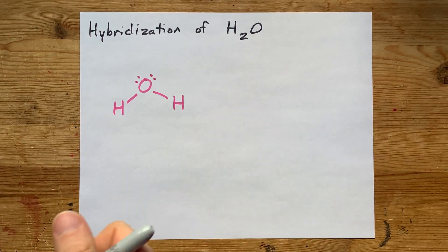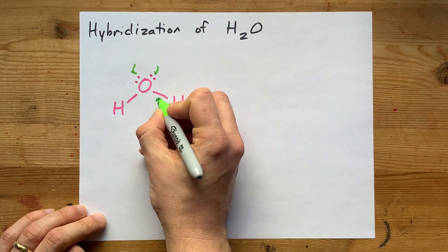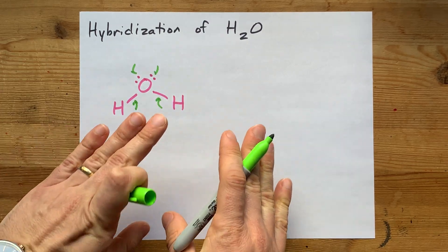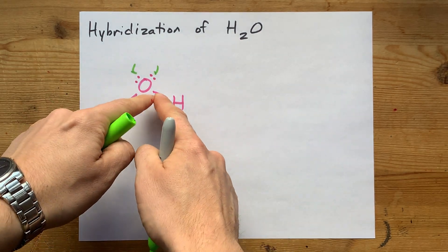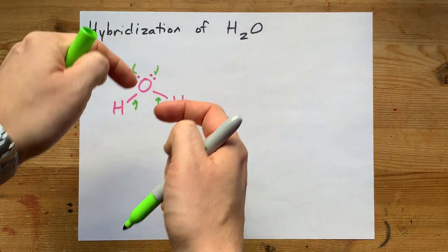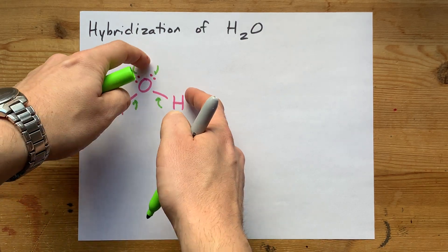What you didn't know is that lone pairs and sigma bonds, sigma being the first bond between any two atoms, a double bond would be a sigma bond and also a pi bond. And a triple bond would be a sigma and two pi bonds.